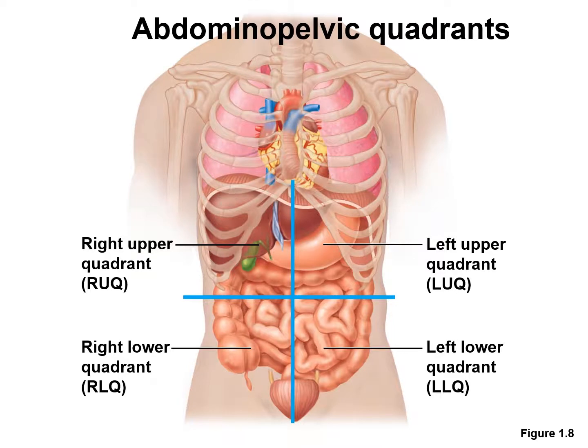Imagine two lines, one horizontal and one vertical, intersecting each other at the belly button level. This divides the entire abdominal and pelvic area into four parts, and each part is known as a quadrant. The four quadrants are the left upper quadrant, the right upper quadrant, the left lower quadrant, and the right lower quadrant. Please keep in mind that the left on the specimen is actually to your right, while the right quadrant of the specimen is actually towards your left.